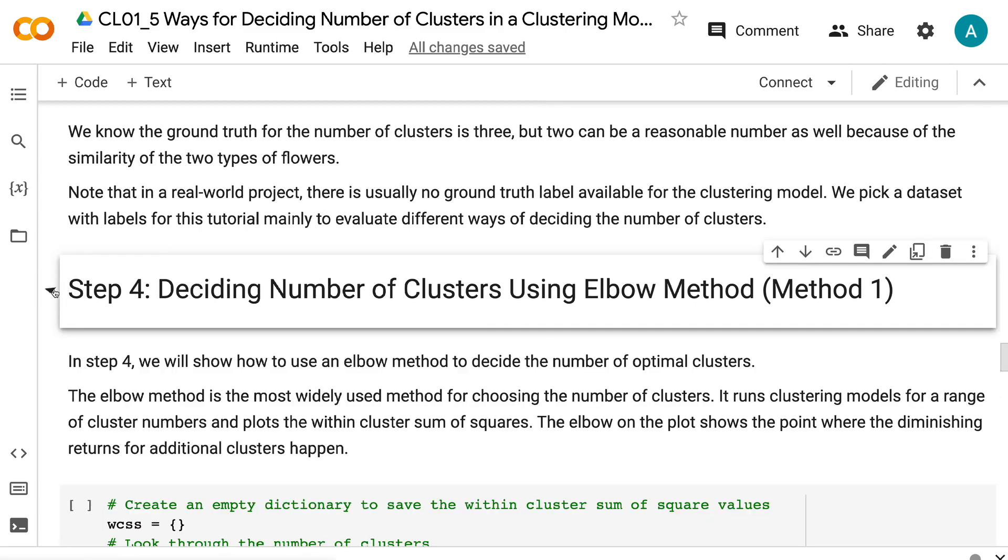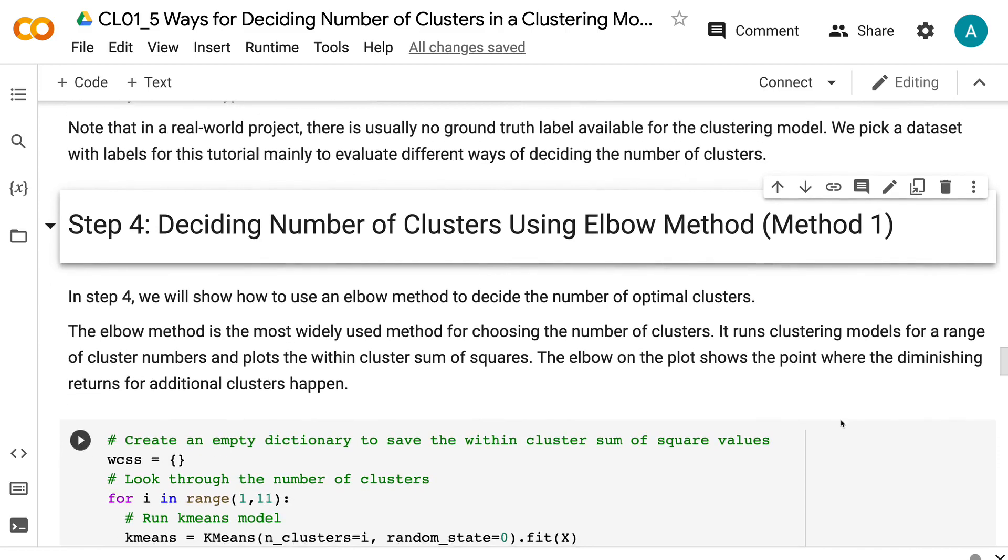Note that in a real-world project, there is usually no ground truth label available for the clustering model. We pick a dataset with labels for this tutorial mainly to evaluate different ways of deciding the number of clusters.